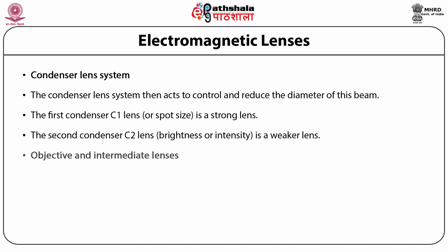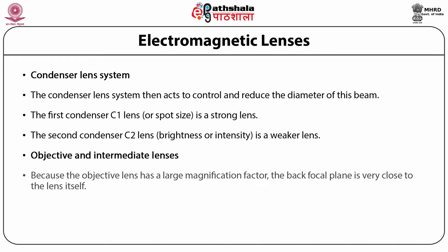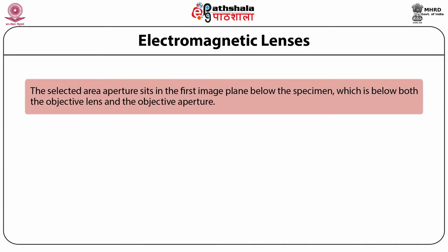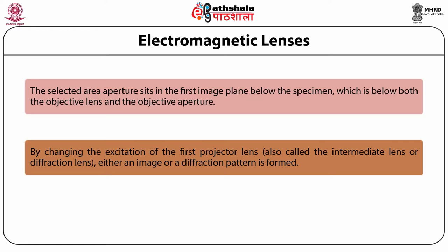The objective lens has a large magnification factor, with the back focal plane located very close to the lens itself. The objective aperture — the middle aperture on the column — is mounted in the back focal plane. Inside the first image plane beneath the sample, a selected area aperture is placed underneath both the objective lens and the objective aperture. By altering the first projector lens excitation, also known as the intermediate or diffraction lens, either an image or a diffraction pattern is produced.